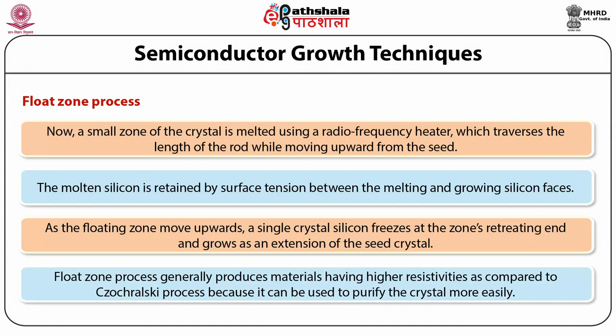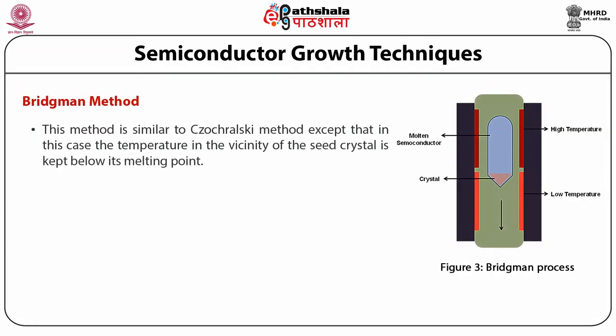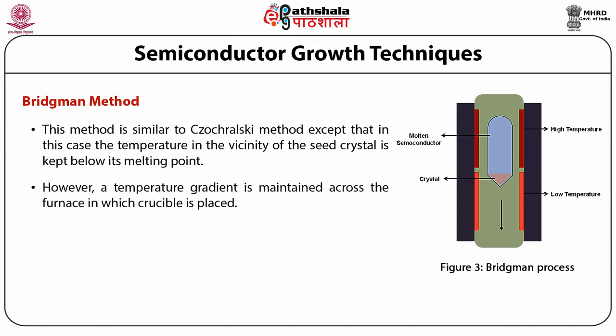As the floating zone moves upward, single-crystal silicon freezes at the zone's retreating end and grows as an extension of the seed crystal. The float zone process generally produces materials with higher resistivities compared to the Czochralski process because it can be used to purify the crystal more easily. The Bridgeman method is similar to the Czochralski method, except that the temperature in the vicinity of the seed crystal is kept below its melting point.